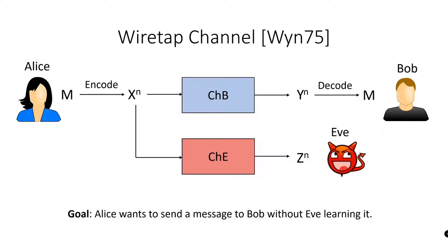In this model, Alice wishes to send a message M to Bob by sending an encoding of M across Bob's channel, channel B. However, there exists an eavesdropper Eve who receives the encoding of M across a separate eavesdropping channel, channel E. Alice's goal is to encode the message in such a way that Bob can decode it, but Eve cannot.